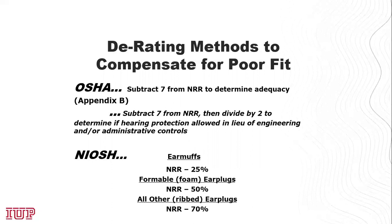There is also a NIOSH method. NIOSH is not a regulating body, but they do have recommendations for de-rating hearing protection. For earmuffs, they recommend utilizing only 25% of the NRR. For ribbed rubber-type earplugs, they recommend utilizing 70% of the NRR as the maximum real-world attenuation.